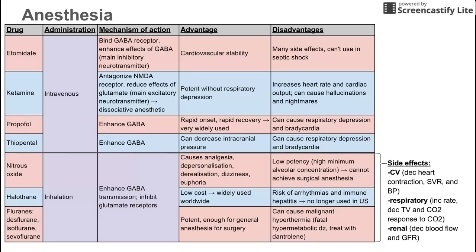So inhalation anesthetics affect three major organ systems: the heart, the lungs, and the kidneys. They reduce cardiovascular effects, they increase respiratory rate while decreasing tidal volume and CO2 response, and they decrease renal perfusion and glomerular filtration rate. I hope this review of anesthetics has been helpful. Thank you for listening.